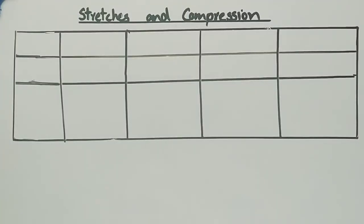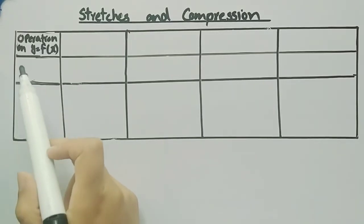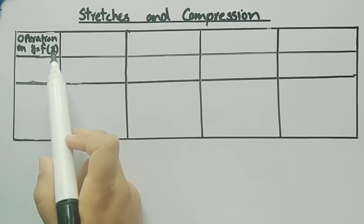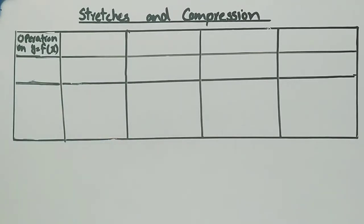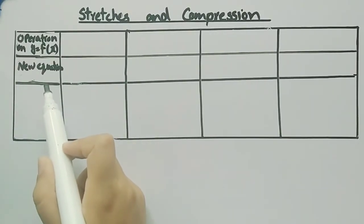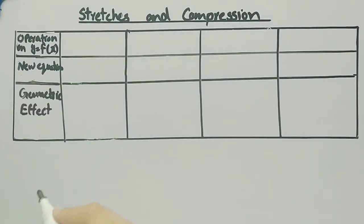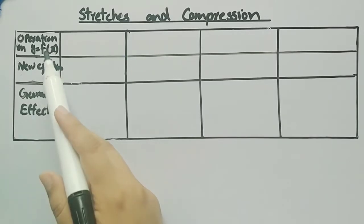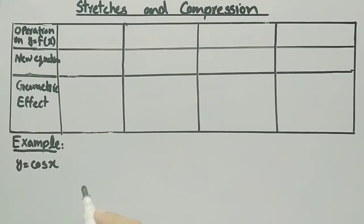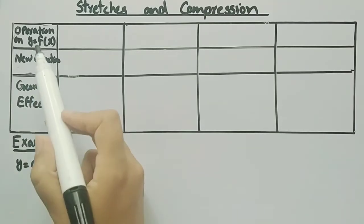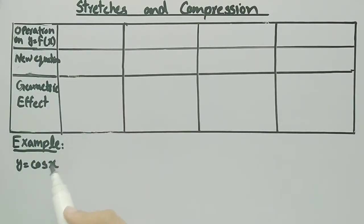In this video we will learn how and when we stretch or compress a graph. To understand this concept we have constructed a table. In the first row we will see different operations on y = f(x) and their effect on the graph. In the second row there will be a new equation formed after the operation on the function. In the third row we will discuss the geometric effect, and lastly we will discuss an example using the function y = cos(x).